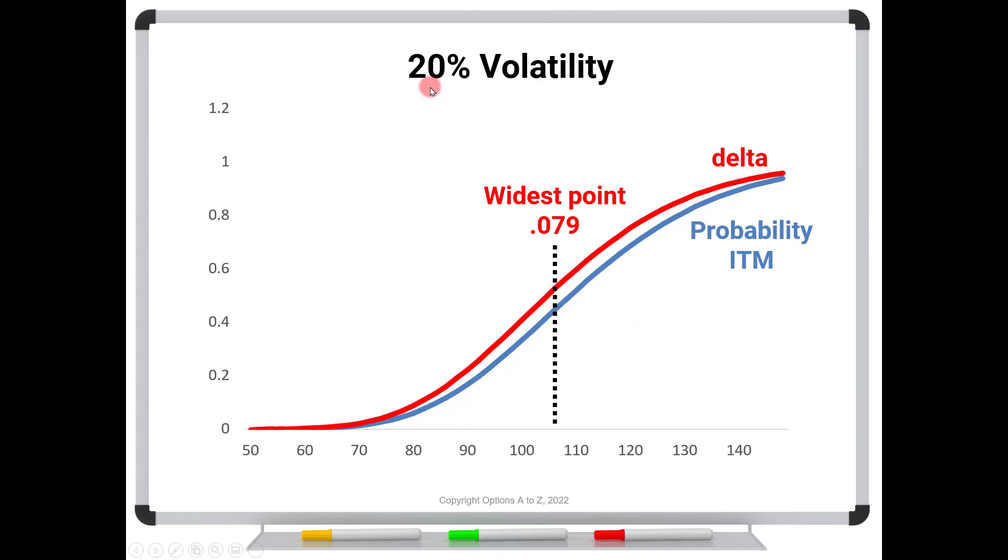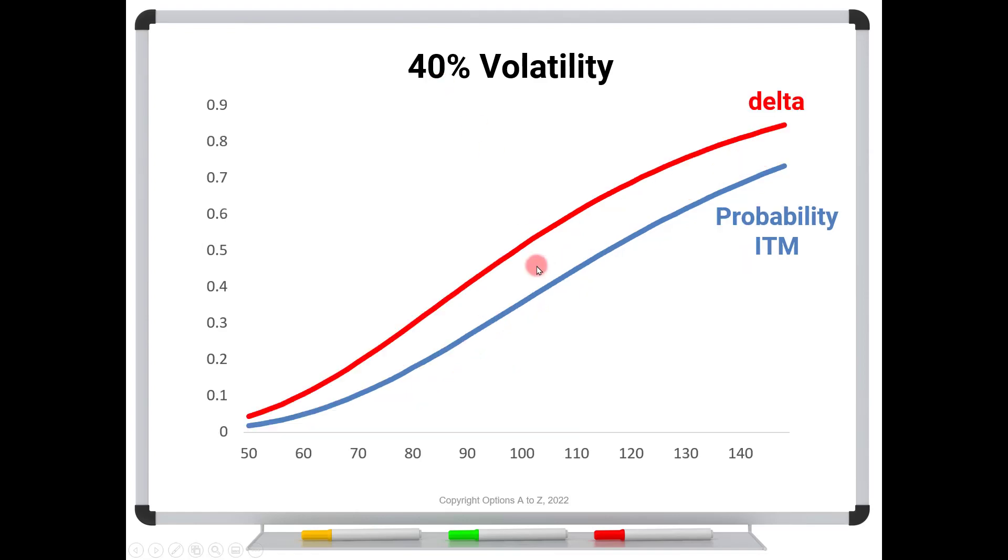But watch what happens to this gap when we increase the volatility from 20% to 40. Look at that. It actually doubles. It's going to have its widest point at the same stock price, but it's going to double. The widest point is now 0.157, almost 16 percentage points off. And that's just with volatility at 40%, which is not by any stretch a huge volatility. Recently in 2021, certainly during COVID, we've seen 40, 50, 60 volatilities, 85 during COVID. So 40 is not really all that high. And look at how wide that gap is for such a wide range of stock prices.